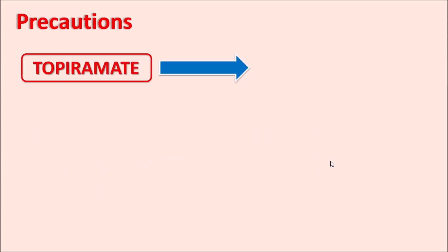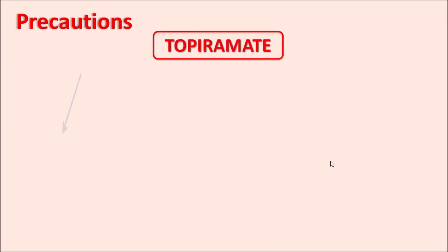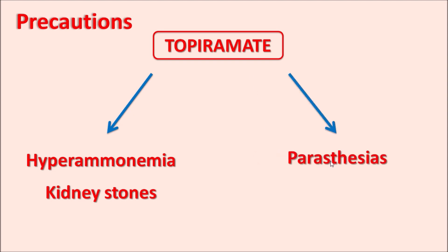Another important precaution is that this drug produces fetal toxicity. In pregnant women, it can produce cleft lip and cleft palate in the newborn, as well as reduced fetal weight. So topiramate produces significant fetal toxicity and is less preferred in pregnant women. Similarly, this drug can increase serum ammonia levels, resulting in hyperammonemia, and it can also produce renal stones. Care should be taken to monitor these conditions, and the drug can also produce loss of sensation — paresthesias.